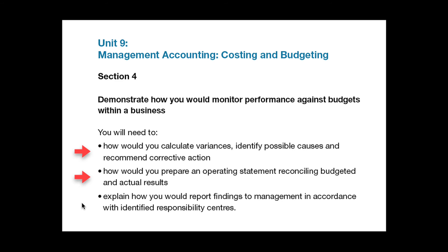On bullet point 3, ideally using your own organisation or a suitable researchable one, identify responsibility centres — sometimes known as cost centres or profit centres. You might find that responsibility centres are not always labelled as such, so check with your line manager or finance department, then describe it and prepare a simple report on its current budget performance. If appropriate, you can use the findings from the operating statement you prepared in response to the previous bullet point.